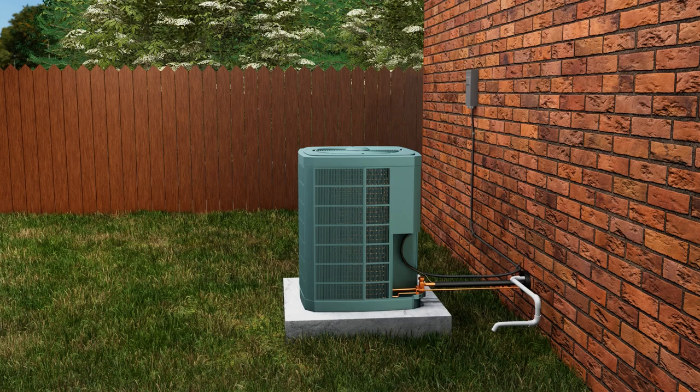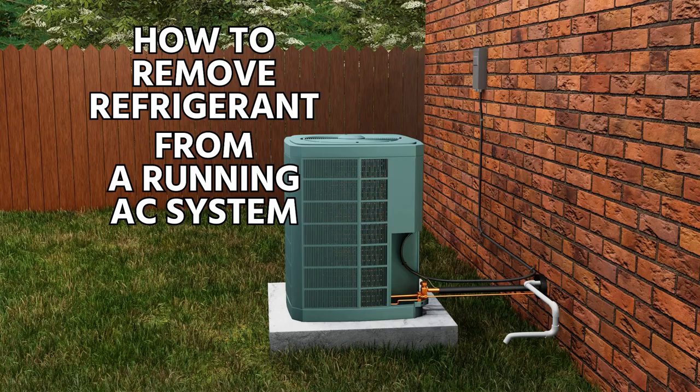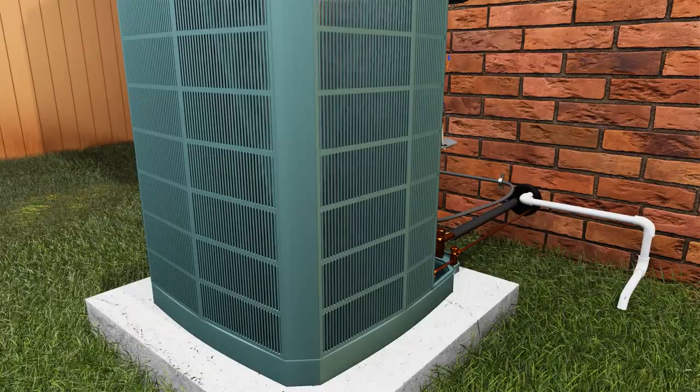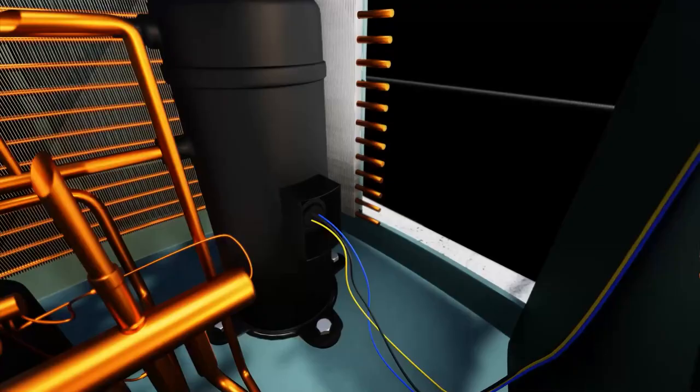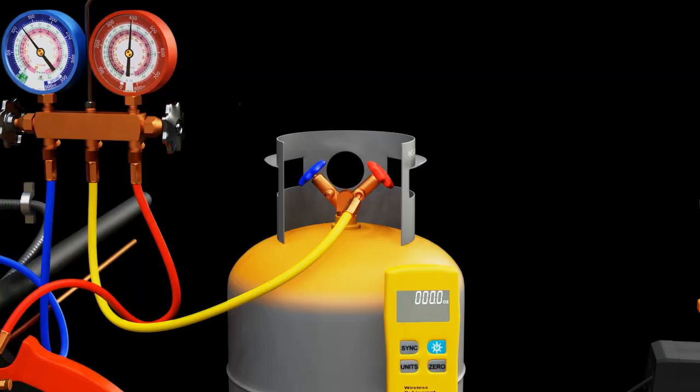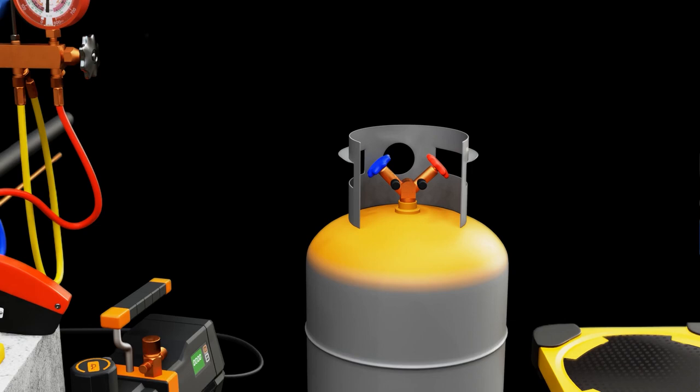This video is going to be about how to remove refrigerant from a running AC system. If you have a compressor that is operational, it's actually quite easy to get refrigerant out of the system, only to a point. You don't want to pull it down into a vacuum, but you can remove a good portion of the refrigerant very easily by just connecting from your liquid line to a recovery cylinder.